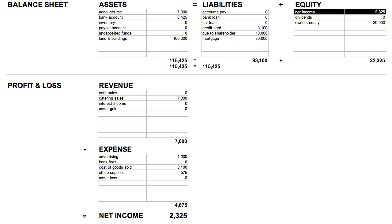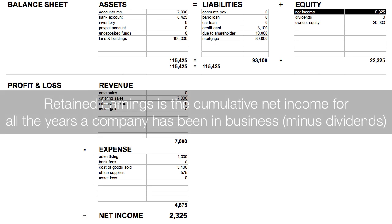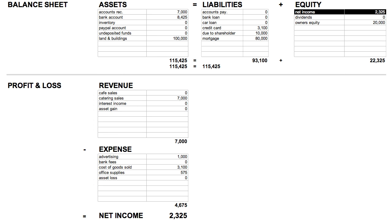So this profit and loss report is telling us exactly how we made money, through catering sales, and where we spend money, largely on costs of goods sold. When the profit and loss is reset, the net income is added to equity and is called retained earnings. Retained earnings is the cumulative net income for all the years the company has been in business minus dividends. In the accounting equation cheat sheet, we don't get so complicated as to have more than one fiscal year. There aren't any dates here, so if you look at the balance sheet, it says net income instead of retained earnings. But in this example, they both mean the same thing.